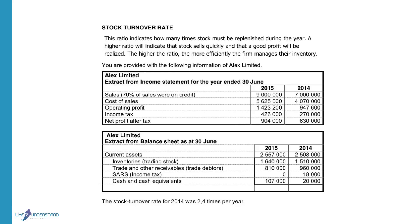This rate indicates how many times stock is replenished during the year, or how many times a year you have to replace the stock because it's sold and you have to buy new stock. A higher ratio indicates that stock sells quickly because you have to replace it more often, and that you will make a bigger profit. The higher the ratio, the more efficiently the firm manages the inventory.